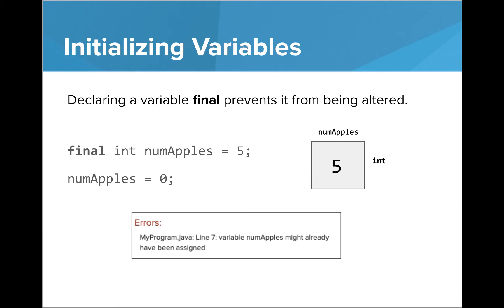Variables can be protected from alteration if the keyword final is included before the data type. If there are any attempts to change the variable value, then an error will be called indicating that the variable has already been assigned. This is often used as a security measure in more complex programs to ensure that values cannot be changed or modified by others.